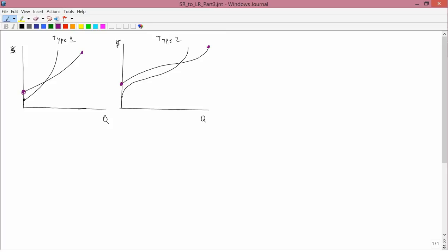I've drawn here these two different short run total cost curves. I'll call the one that has the purple beginning and end SRTC2 and the other one SRTC1.